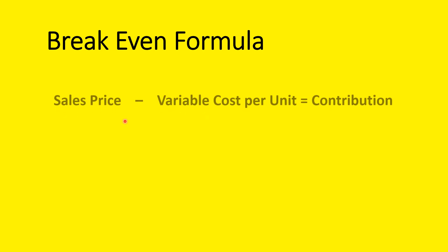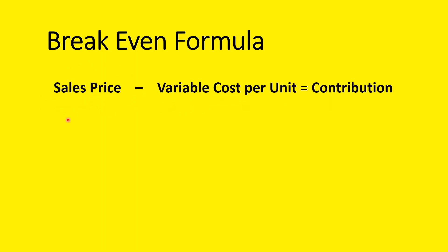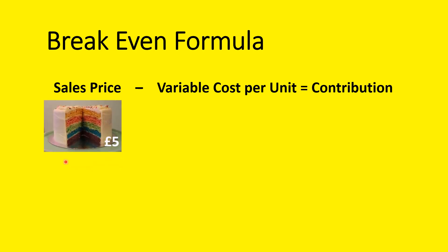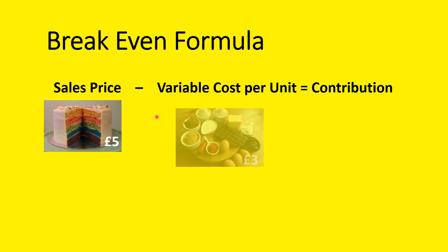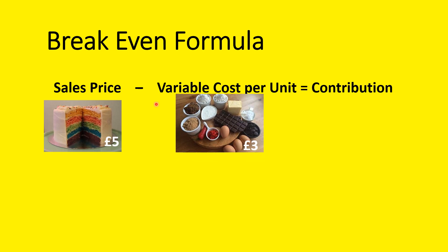So first of all, we are going to take the sales price of an item — how much we're selling it for. In this case, we're going to sell a lovely cake. It's multicolored and it's going to sell for five pounds. Every time I sell one, I will receive five pounds. Now, I have to pay for the ingredients of this cake, so I then take the variable cost per unit off that cake, because I've used three pounds worth of ingredients to make my cake that I sell for five pounds.